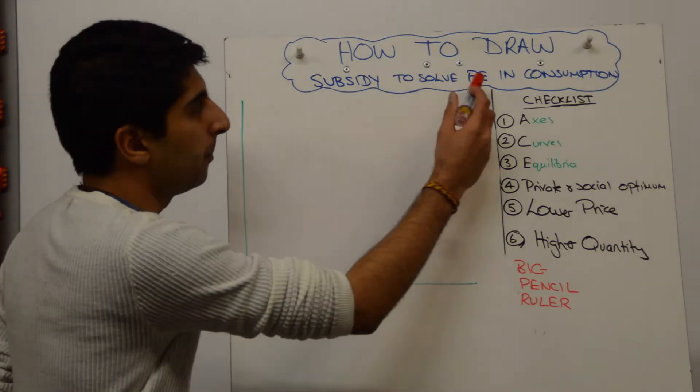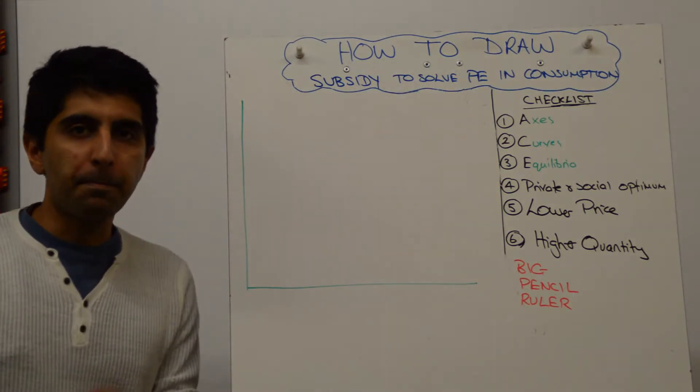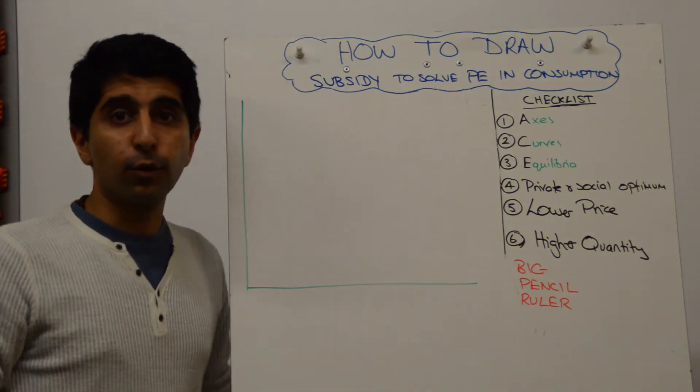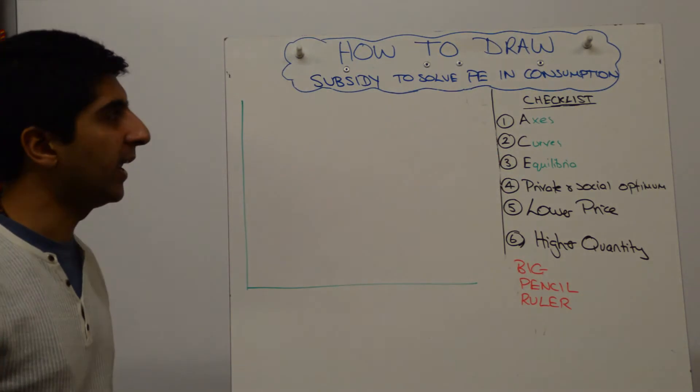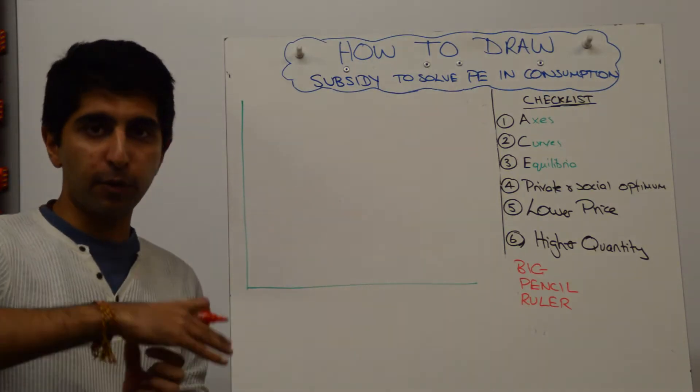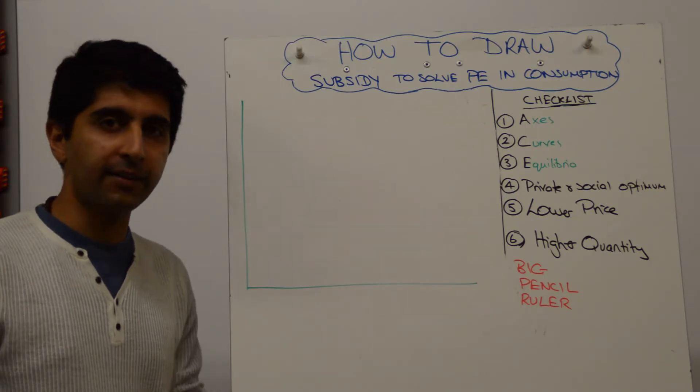Hello everybody! A subsidy to solve positive externality consumption market failure - potentially this could also be merit good market failure. How do you draw this diagram? A very important diagram to help with your analysis for a question or essay on this.